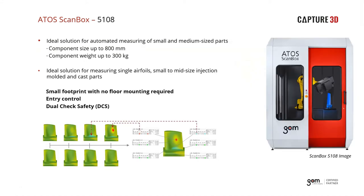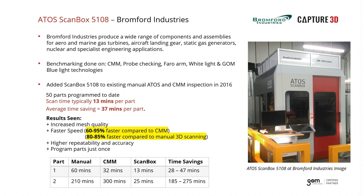The 5108 has an 800mm part envelope and supports components up to 300 kilograms. Bromford did benchmarking with multiple technologies — CMMs with ruby-tipped probes, FARO arms, different white light sources, and GOM's blue light technology. They added a 5108 to complement their CMM inspection. Results: 50 parts were programmed with an average scan time of 13 minutes per part and average time savings of 37 minutes per part compared to CMM inspection, while providing higher repeatability and accuracy. Once a part is programmed, cycle time is just data collection. Specific comparison: Part 1 — manual 60 min, CMM 32 min, ScanBox 13 min. Part 2 — manual 210 min, CMM 300 min, ScanBox 25 min.